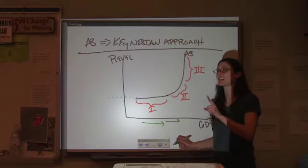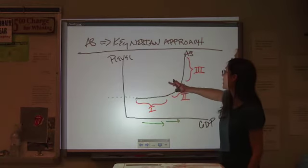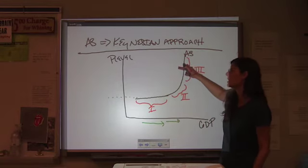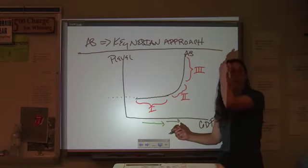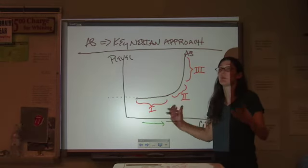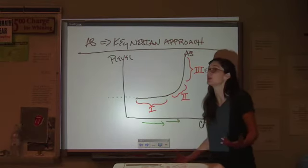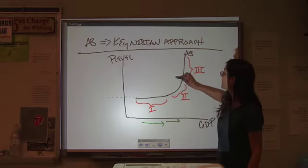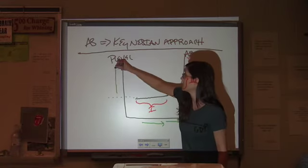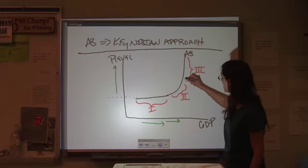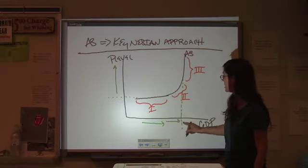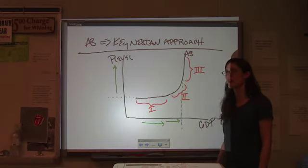If we push past that, if we push past that, if we go past full employment, to the point where, you know, to get anybody to go to work, we have to pay them exorbitant salaries, we have to pay people overtime to keep them coming to work. Now we're seeing upward pressure on price. We're moving up our price axis. But for this vertical range of the curve, the curve here, we see no benefit for GDP.